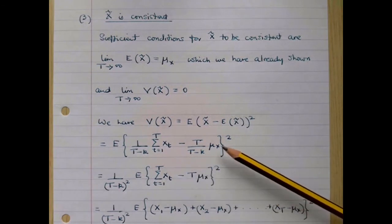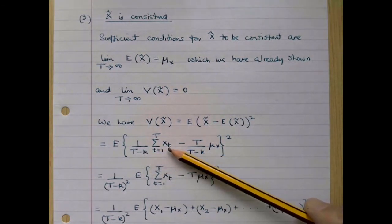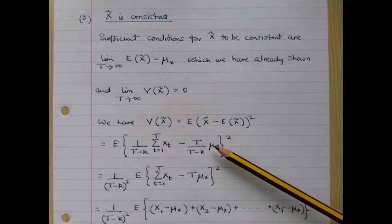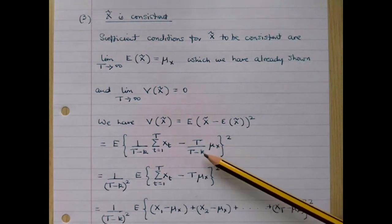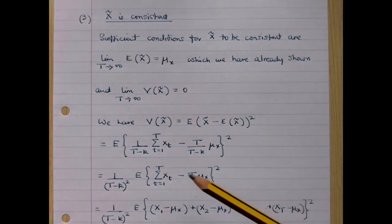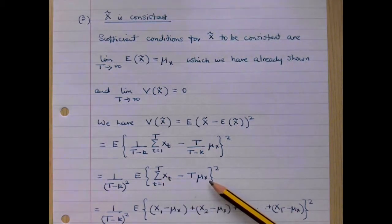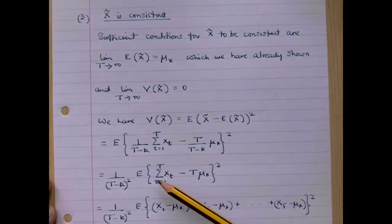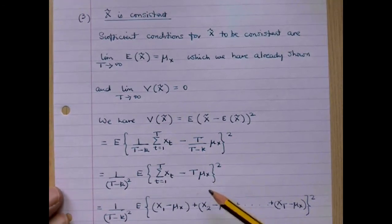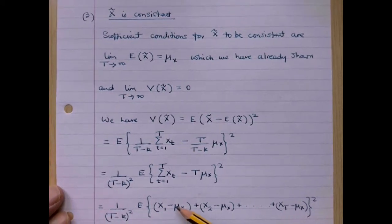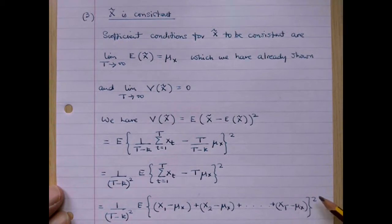By substitution, we can write that as the expected value of 1 over T minus k multiplied by the sum from t equals 1 to capital T of xt, minus the expected value of x tilde — which we've already derived as T divided by T minus k times mu x — all squared. We can take out 1 over T minus k squared, and multiply by the expected value of the sum of xt minus T times mu x, all squared. Writing out the terms in full, this becomes 1 over T minus k squared multiplied by the expected value of x1 minus mu x plus x2 minus mu x, etc., up to xT minus mu x, all squared.